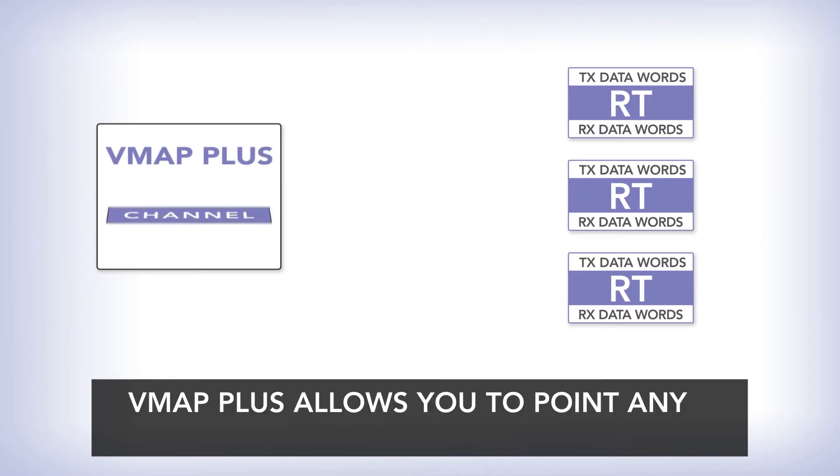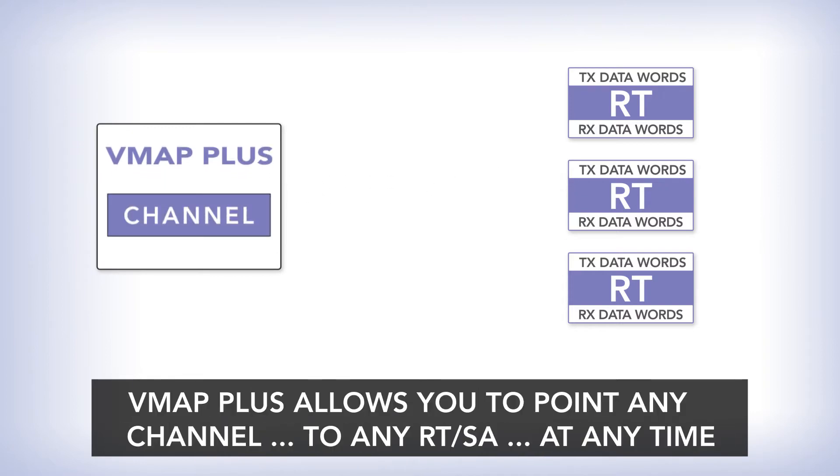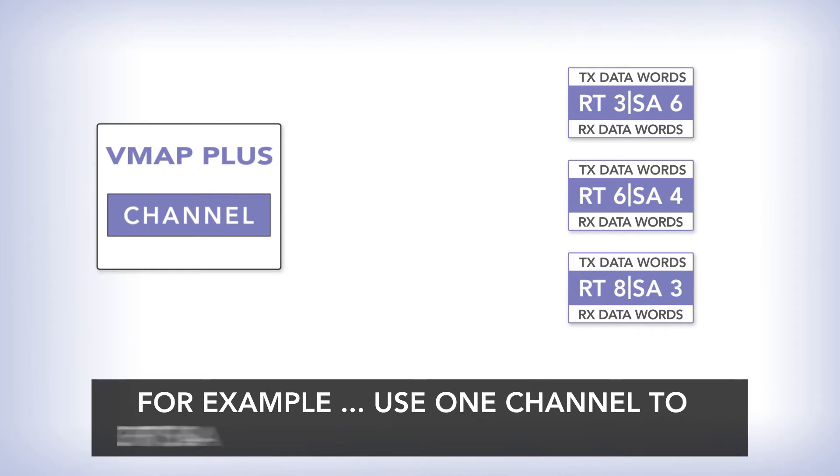VMAP Plus allows you to point one or more VMAP channels to one or more RTSAs at any time. For example, if you're using RT3SA6, just use one of the channels that you've already created to read and write the memory.